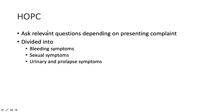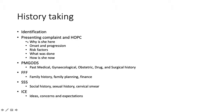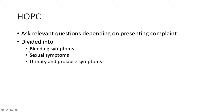After identification, we go to presenting complaint and history of presenting complaint. HOPC stands for history of presenting complaint — ask relevant questions depending on the presenting complaint, structured as: why is she here, onset and progression, risk factors, what was done, and how is she now. The symptoms are divided into bleeding symptoms, sexual symptoms, and urinary and prolapse symptoms. For heavy menstrual bleeding, you ask bleeding questions first. For bleeding symptoms regarding menstruation: how frequent is the menstruation — every how many days does your menses come?